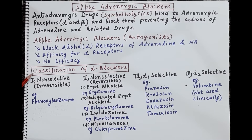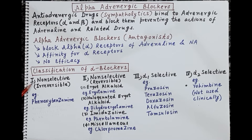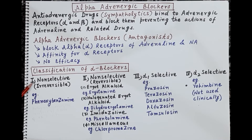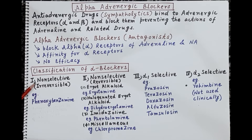Coming to the classification of alpha blockers: alpha blockers are of four types. The first type is the non-selective irreversible alpha blockers. Non-selective means these are drugs that block alpha-1 receptors as well as alpha-2 receptors. Alpha receptors are of two types — alpha-1 and alpha-2 — and these non-selective drugs block both.